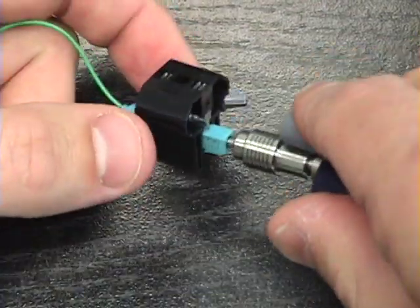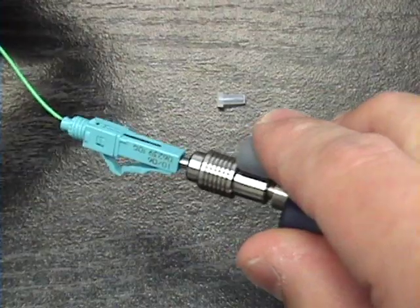Maintaining inward pressure on the fiber, squeeze on the wedge clip and remove it completely.